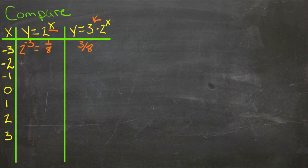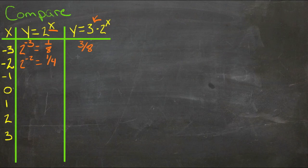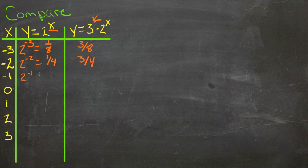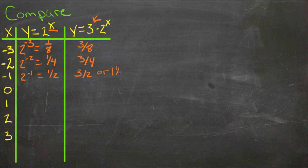For x is negative 2, we get 2 to the power of negative 2, or one fourth, and then three fourths. We get 2 to the negative 1, one half, three halves, or 1 and a half if you prefer.